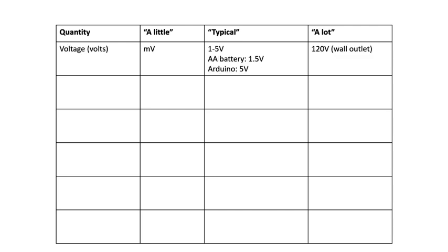We're going to go through each quantity one at a time, and briefly talk about what are typical values, what's a lot, what's a little. This completed table is also available as a PDF on Canvas if you just want it as a reference. First, for voltage, measured in volts.